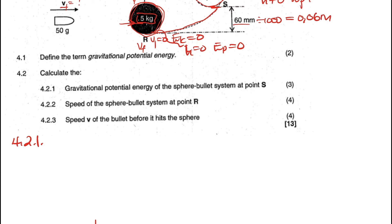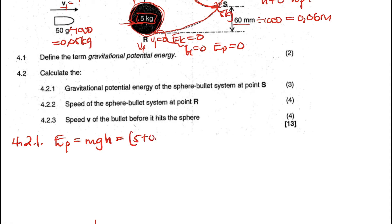Calculating for question 4.2.1, gravitational potential energy EP = mgh. The combined mass is the bullet's mass (0.05 kg) plus the wooden block's mass (5 kg), giving 5.05 kg. Multiplying: 5.05 × 9.8 × 0.06 meters gives an answer of 2.97 joules. That is the gravitational potential energy at point S.